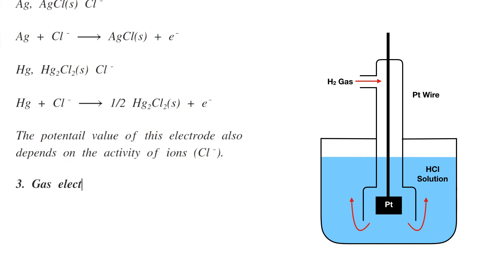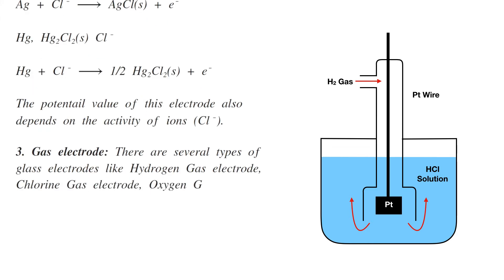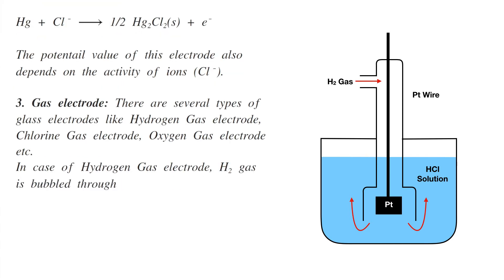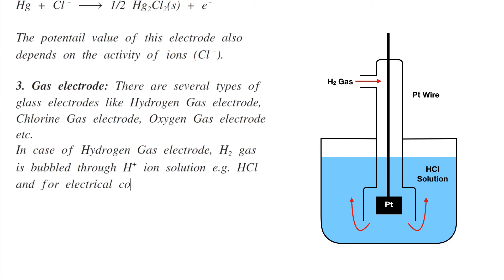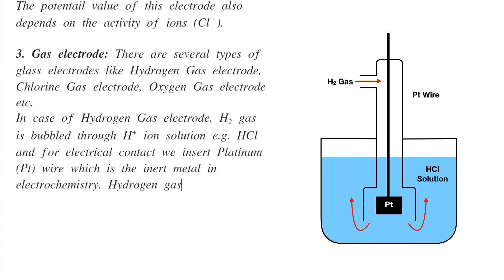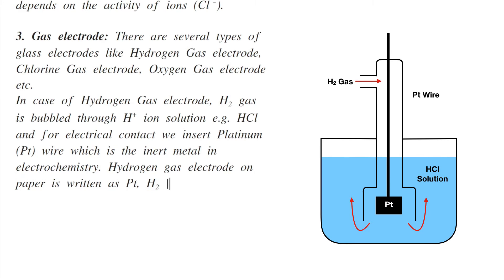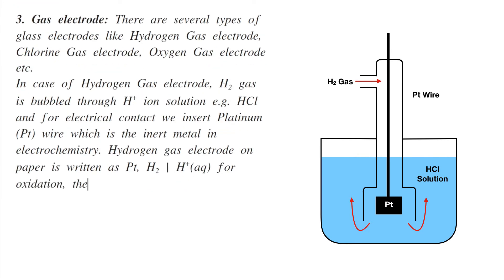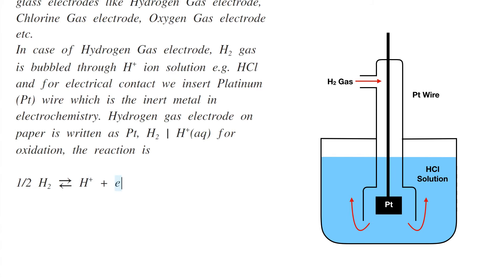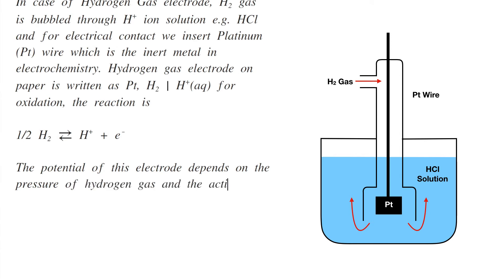Third is the gas electrode. There are several types: hydrogen gas electrode, chlorine gas electrode, and oxygen gas electrode. For the hydrogen gas electrode, hydrogen gas is bubbled through a hydrogen ion solution, such as HCl, and a platinum wire is inserted for electrical contact. It is written as Pt | H₂ | H⁺(aq). The oxidation reaction is: ½H₂ → H⁺ + e⁻. The potential depends on the pressure of hydrogen gas and the activity of hydrogen ions.